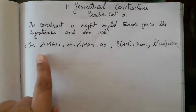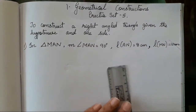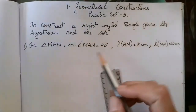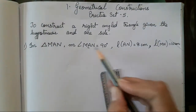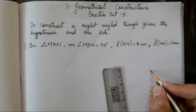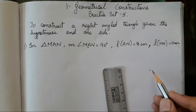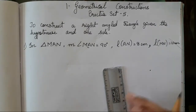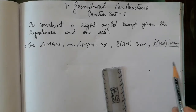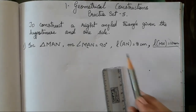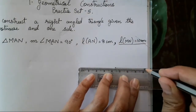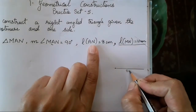First we will draw the rough figure according to the information given in the first question. You have to see what is supposed to be the 90 degree angle. Here, A is supposed to be 90 degree, which means A is going to come at the right angle vertex. Hypotenuse is the biggest side, so it will come opposite. The base is going to be AN, 8 cm.